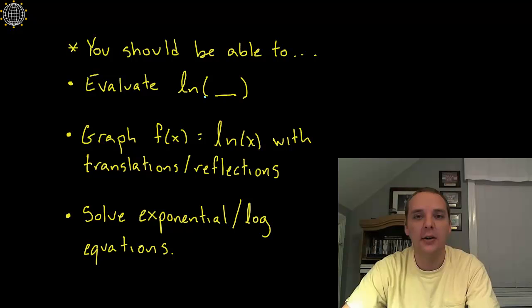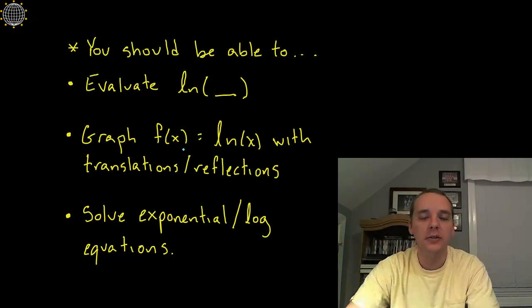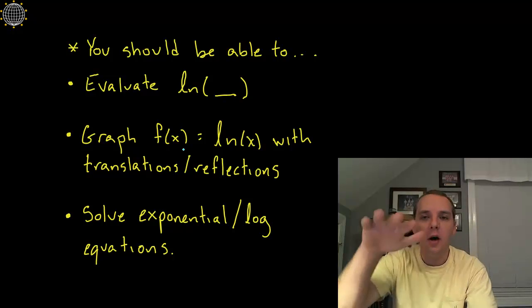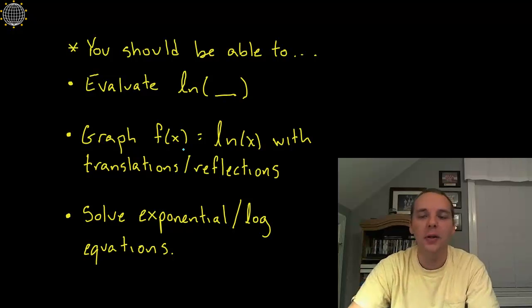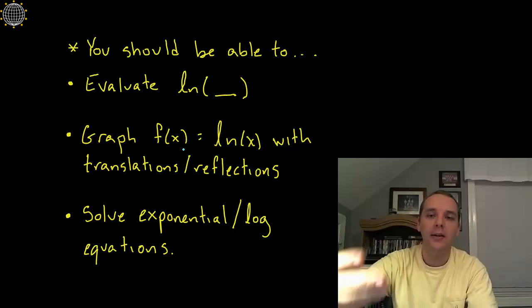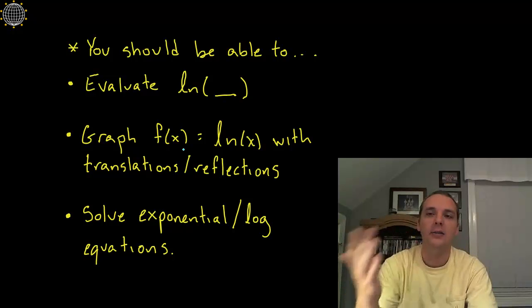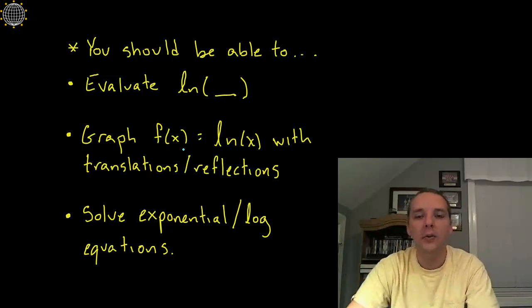You should be able to graph any natural log function with translations or reflections. So a translation would be if you added or subtracted a number to that function. You might move it up or down or left or right depending on where you put it. And negatives will make this reflect either downwards over the x-axis or left-right over the y-axis.